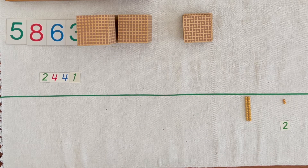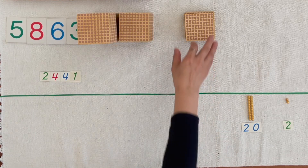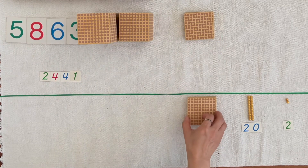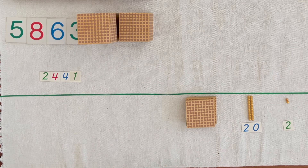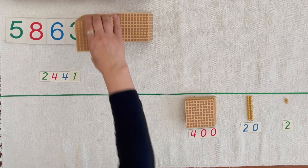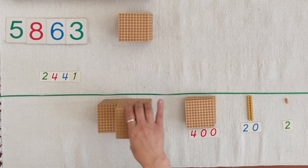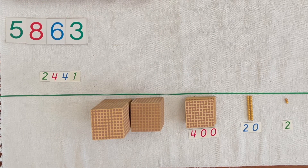Johan, can you bring two tens from the small numerals? One hundred, two hundreds, three hundreds, four hundreds. One thousand, two thousand, three thousands. Johan, can you bring three thousands from the small numerals?